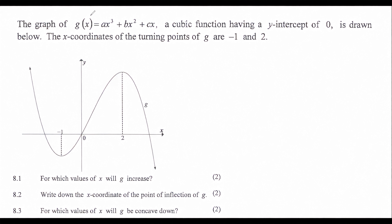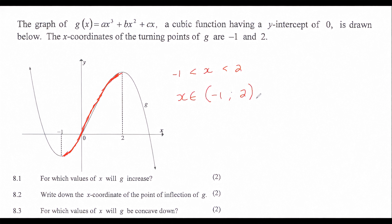When a graph increases, it's going up — from here up to there. So we can say that x must be bigger than minus 1 or smaller than 2. If you prefer interval notation, you can say x is an element going from minus 1 up to 2. That's our first question complete.